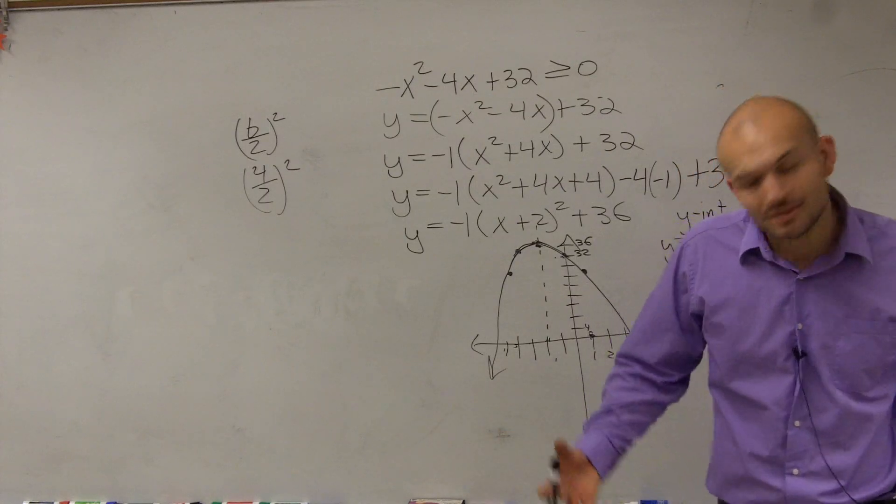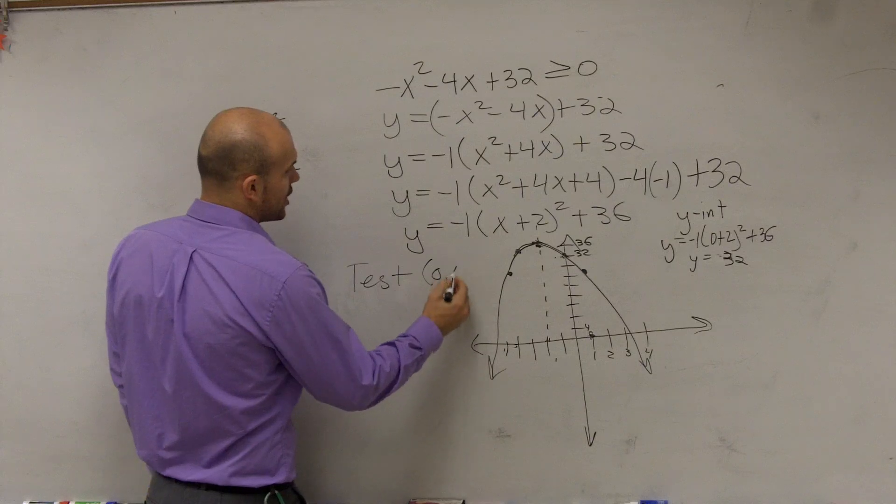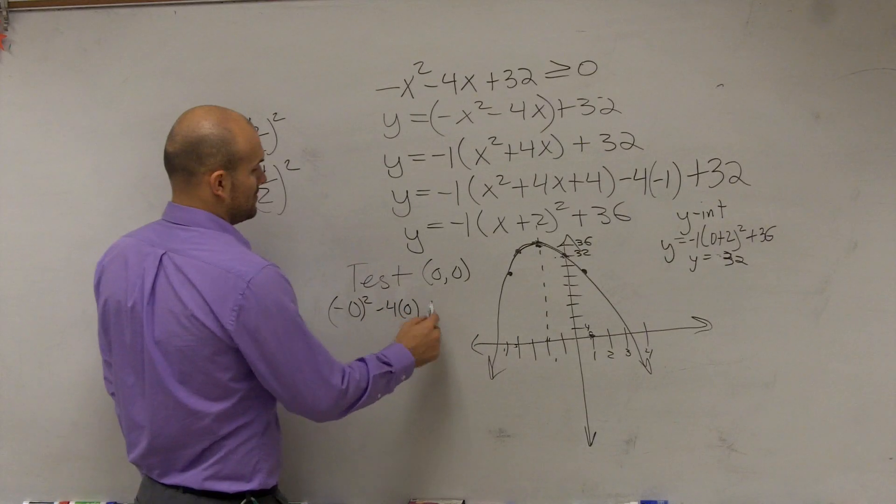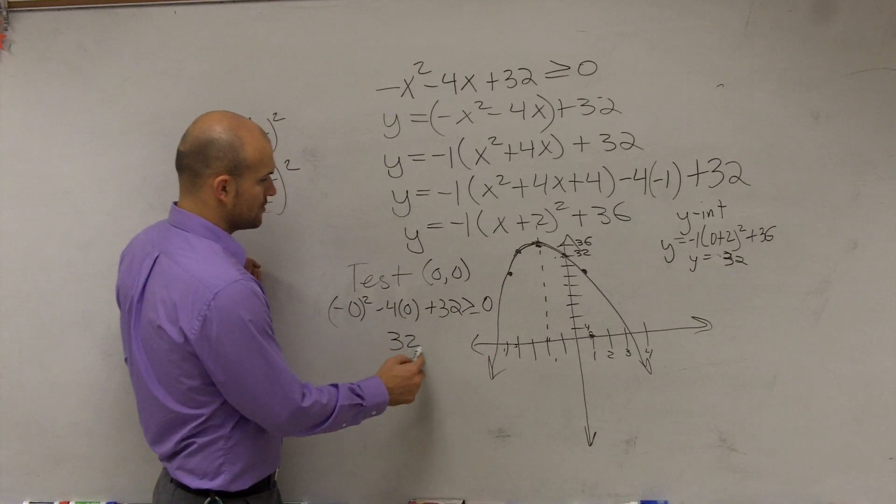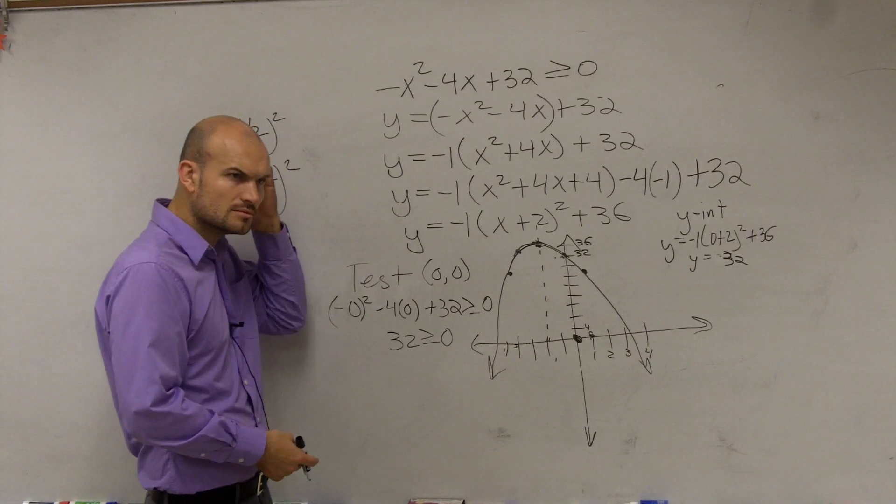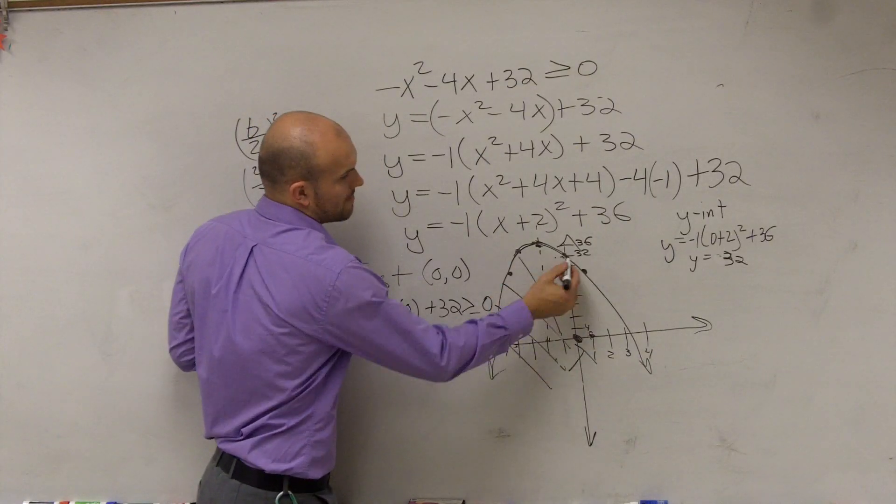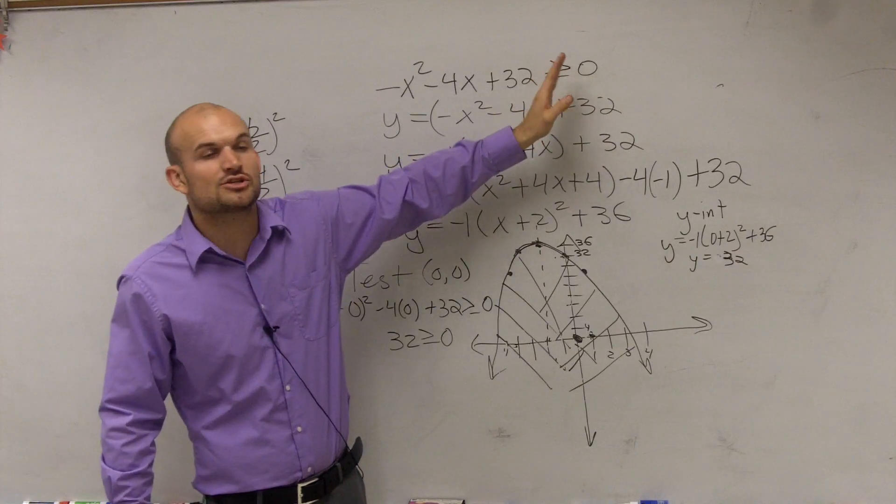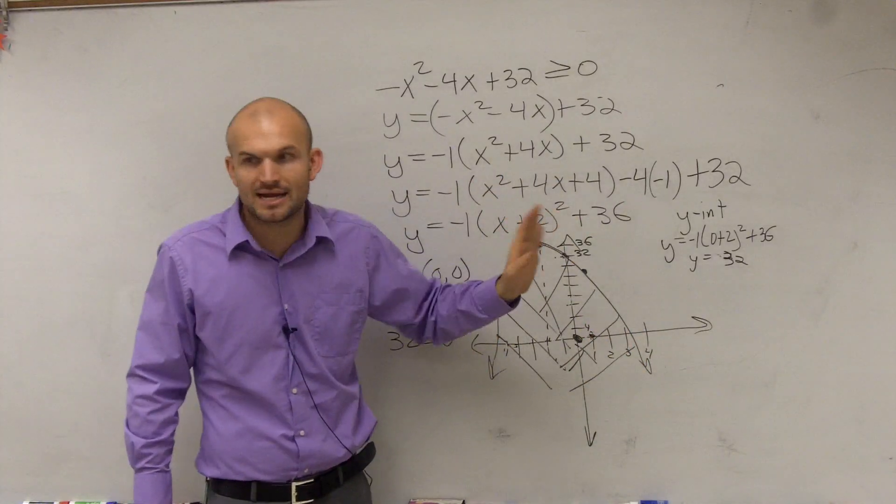And everybody remember, you have to use your test points. And what's the best, greatest test point ever used unless your graph goes through (0, 0)? So we test (0, 0). Negative 0 squared minus 4 times 0 plus 32 is greater than or equal to 0. So is 32 greater than or equal to 0? Yes. So therefore, since our test point is true, we're going to shade towards our test point inside the parabola. And the other thing which I didn't go over is also notice that our inequality symbol is greater than or equal to. So therefore, our shape of our parabola is going to be, not the shape, but the line of our parabola is going to be solid, not dashed.